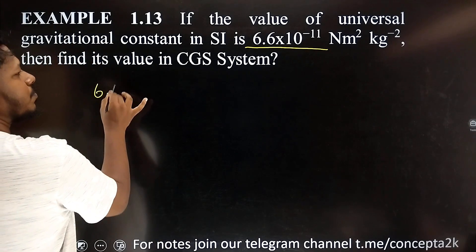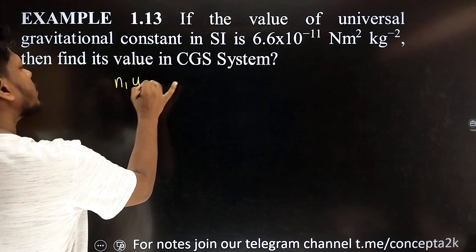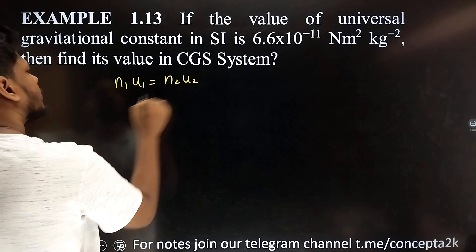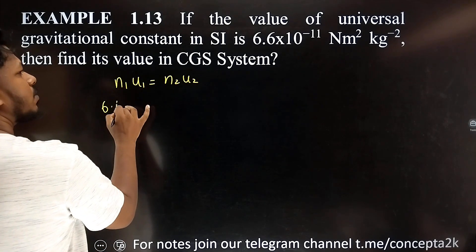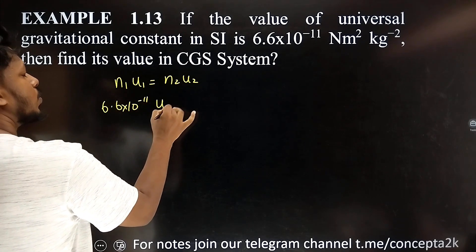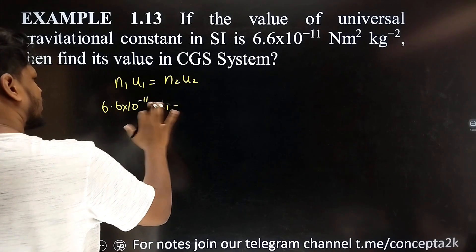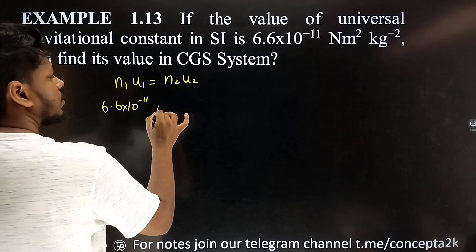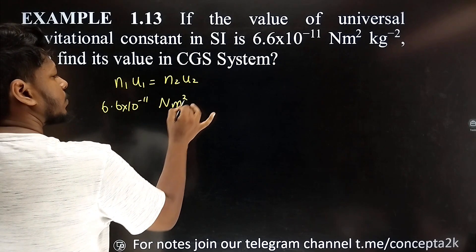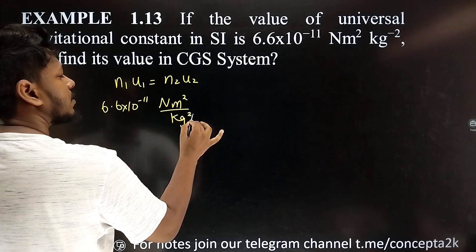So, 6.6 — using the relation n1u1 equal to n2u2. So, 6.6 into 10 power minus 11, u1 is equal to n2. The unit u1 is Newton, meter squared, kg power minus 2, as you can see on the left.